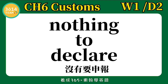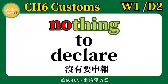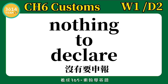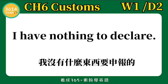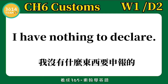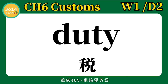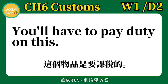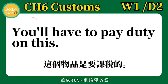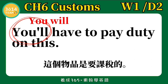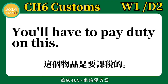Nothing to declare 没有要申报. N-O 在这里不念 no, 是念 not, T-H-I-N-G 念 thing. Nothing. Nothing to declare. I have nothing to declare 我没有什么东西要申报的. 跟着我念一次: I have nothing to declare. Duty 税、税金. You'll have to pay duty on this 这个物品是要课税的. 跟着我念一次: You'll have to pay duty on this. You'll 是 you will 的缩写. You'll have to pay duty on this.